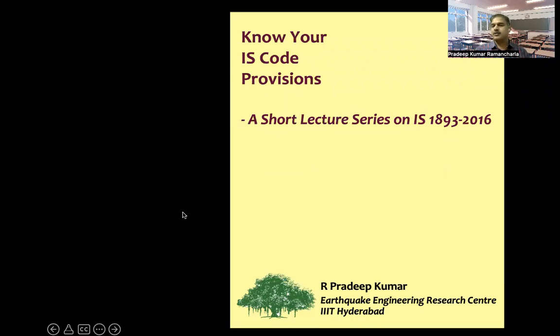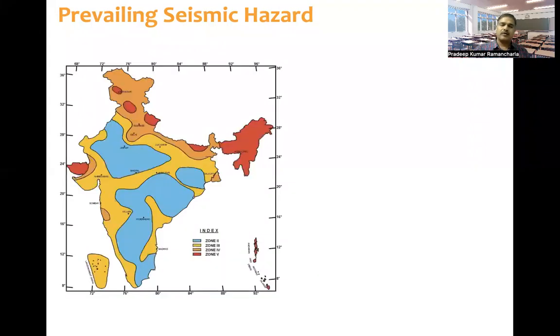This is Introduction to Know Your IS Code Provisions, a short lecture series on IS 1893. When we look at the prevailing seismic hazard in the country, as per IS 1893:2016, the country is divided into four seismic zones: zone 2, zone 3, zone 4, and zone 5. Zone 5 being the severest zone and zone 2 being the least.